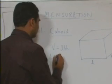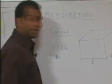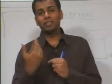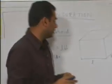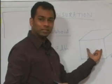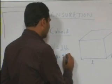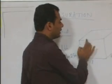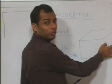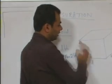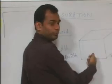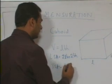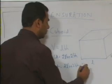Then the lateral surface area — the lateral surface area means the area of the vertical faces. The area of the four faces: the area of one face is L into H, and there are two such faces, giving 2LH. Similarly, the area of the other wall is B into H, and there are two, giving 2BH. So lateral surface area = 2LH + 2BH. The total surface area is 2LH + 2BH + 2LB, where we also include the area of the floor and the ceiling.